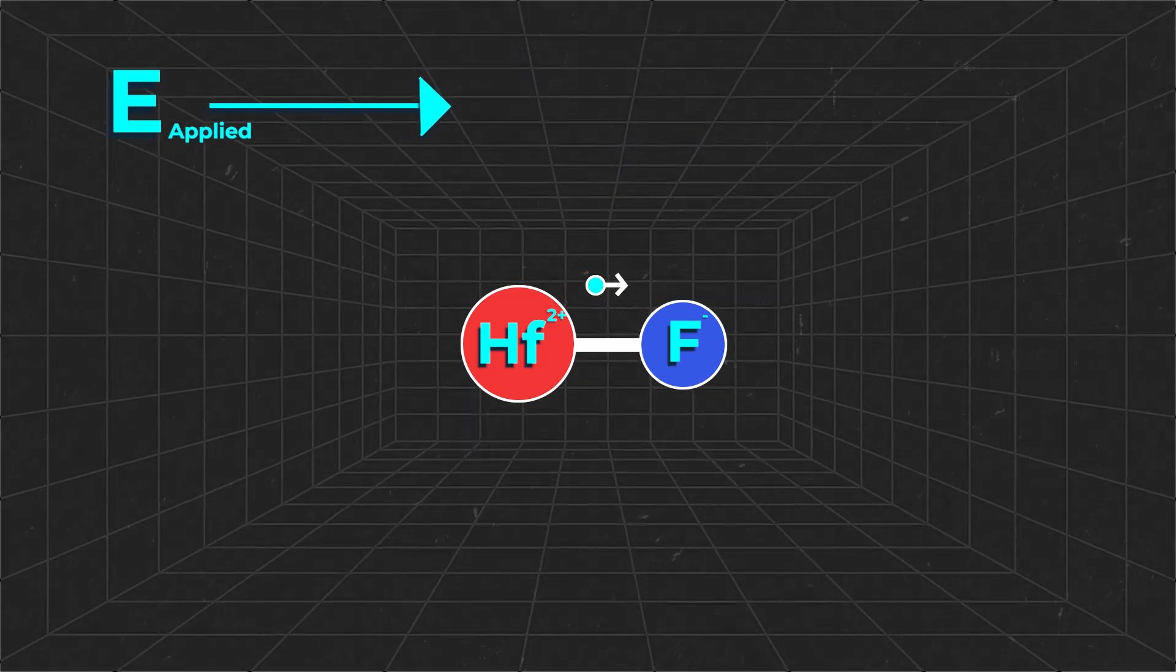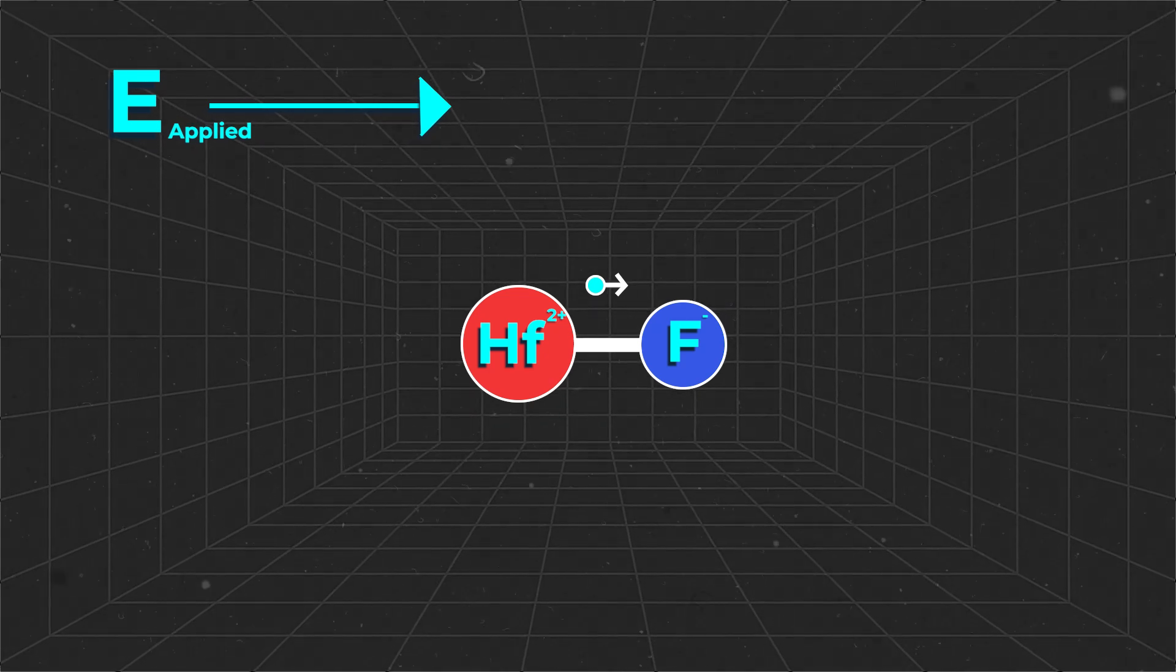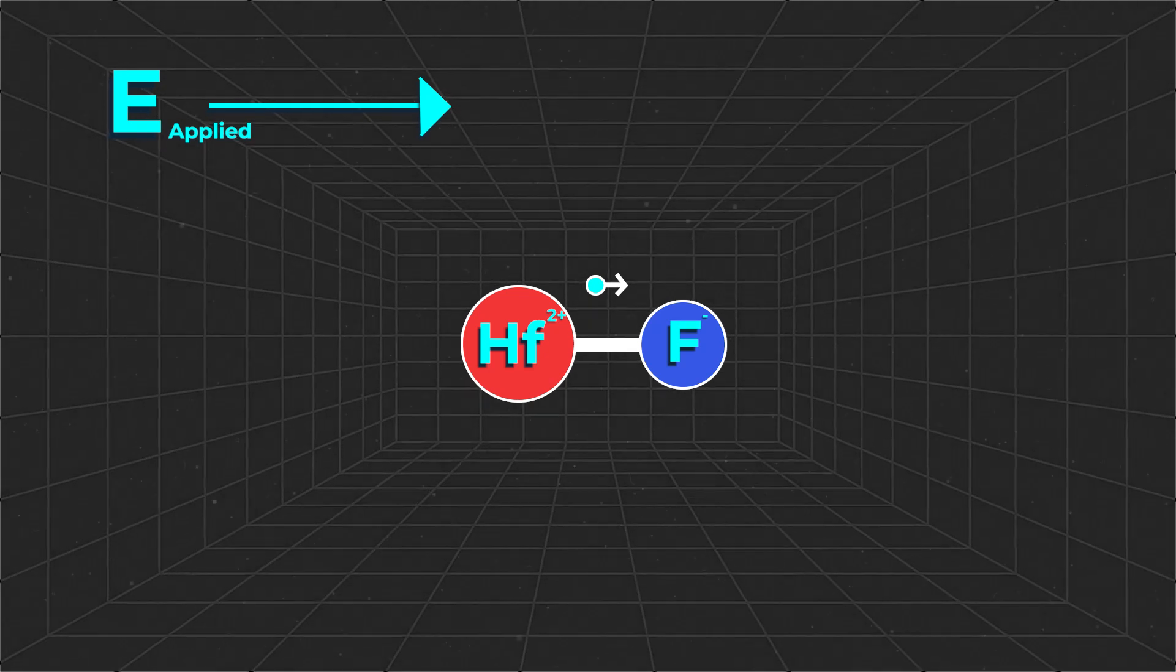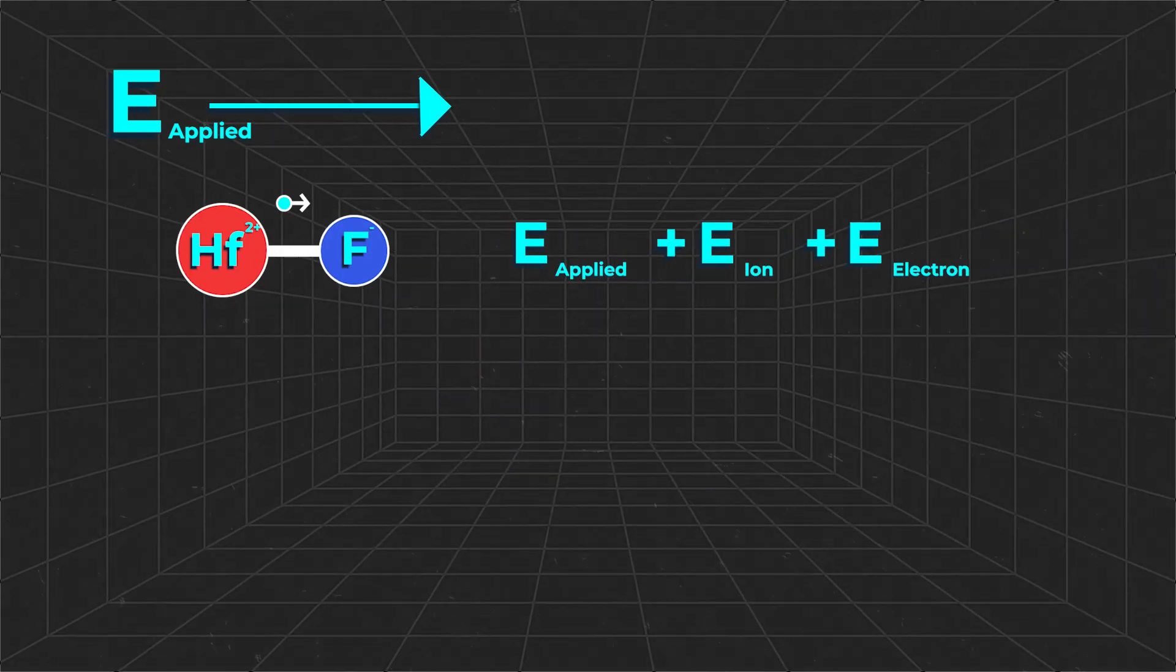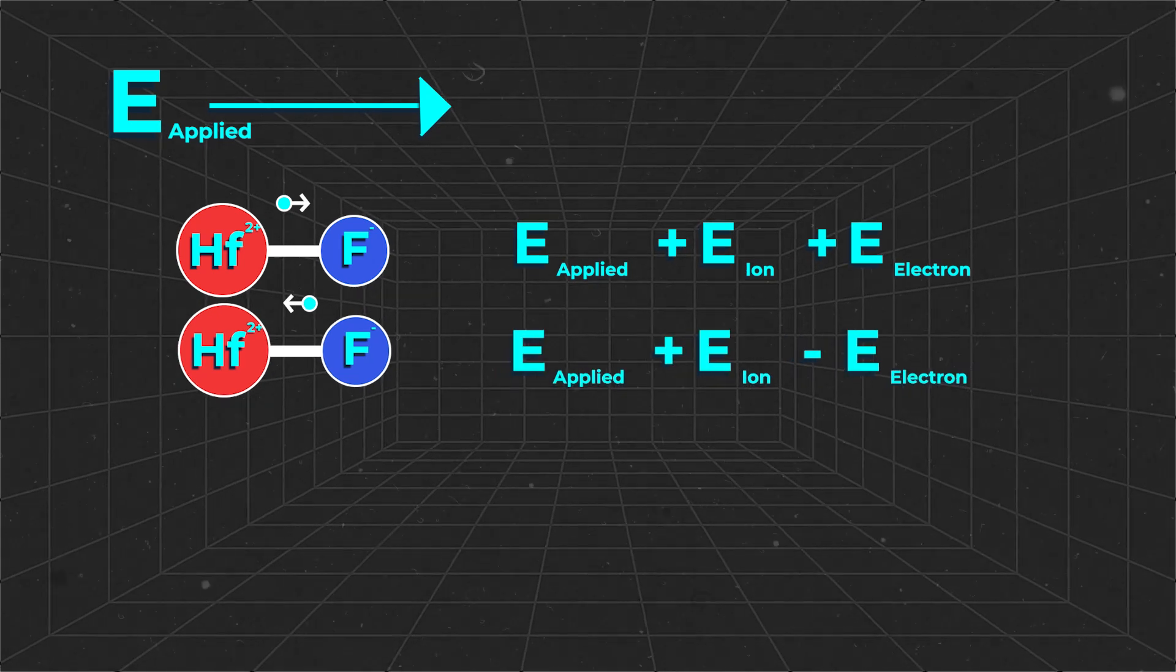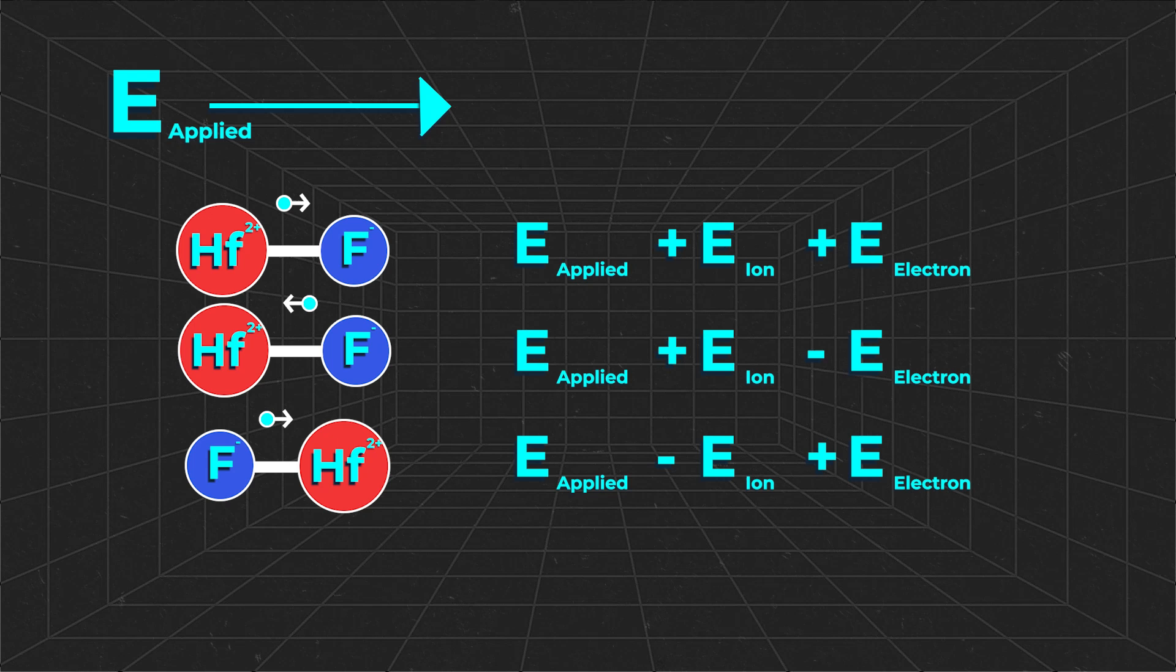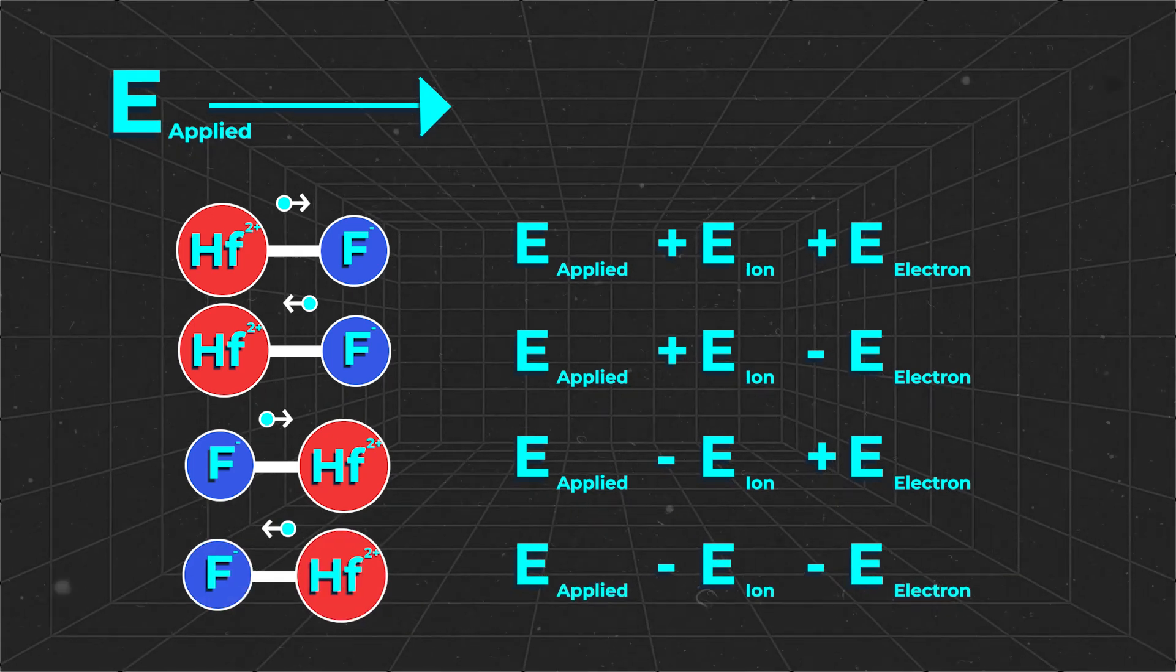In an applied electric field E, if the electron isn't round, if it has a slight dipole moment indicated here by the arrow, then our system would have four possible energy states. Both the ion and the electron are aligned with the field. The ion is aligned, but the electron is anti-aligned. Or, the ion is anti-aligned, but the electron is aligned. Or, both the ion and the electron are anti-aligned.